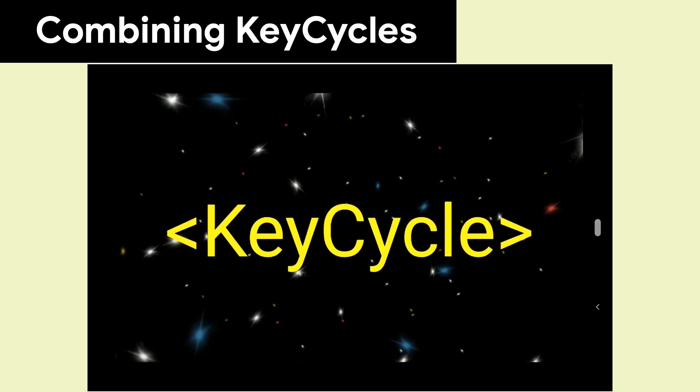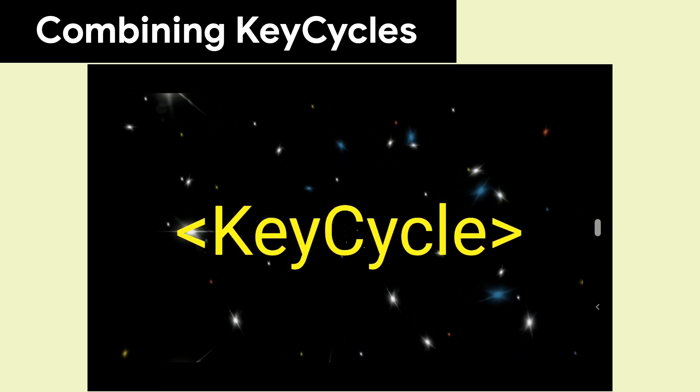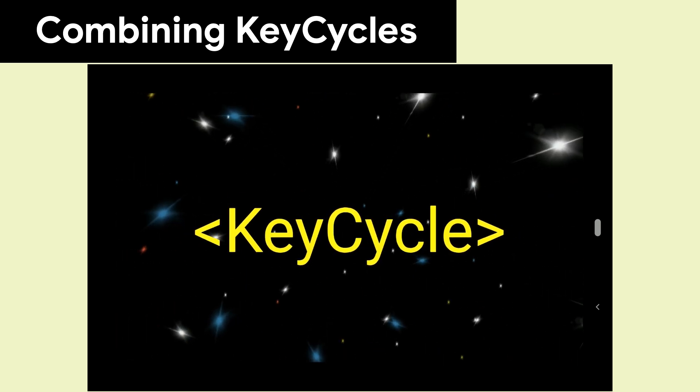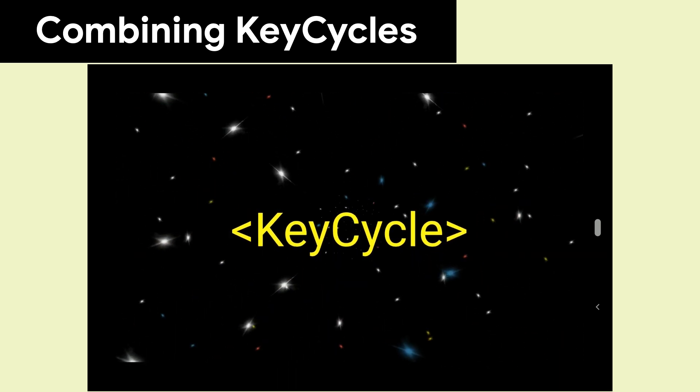In this case, we have nine rotated copies of the star field that are scaled using a KeyCycle of type Sawtooth, and then each animation is staggered.